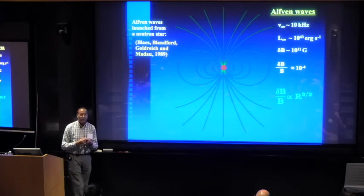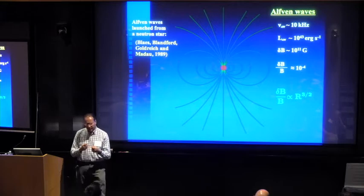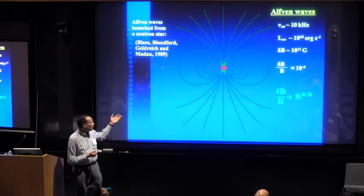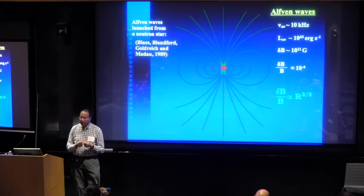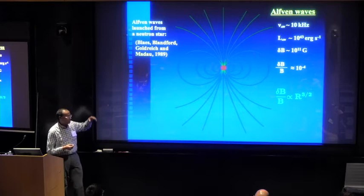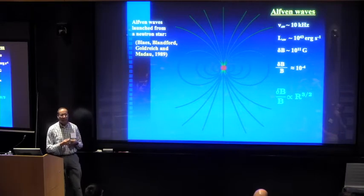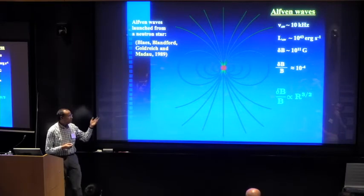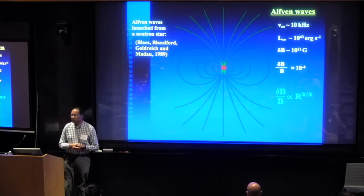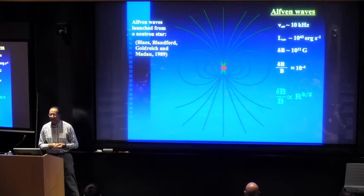The amplitude of this disturbance is large in absolute terms - 10^11 Gauss is the delta B, the perturbation of the magnetic field. But the relative dimensionless amplitude, which is delta B over the strength of the magnetic field, that's small for a magnetar, 10^-4. So it's a very linear perturbation in that sense.